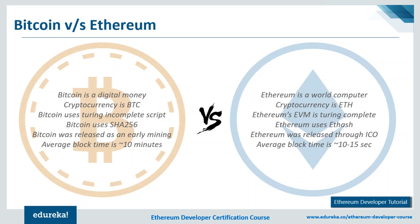The primary difference between the two coins lies in their purpose. Bitcoin was designed as an alternative to fiat currencies with a vision to decentralize the payment system, while Ethereum's developer had a motive to provide a platform for developing decentralized applications. Bitcoin script is Turing incomplete while Ethereum is Turing complete, meaning complex programming and application development can be done on Ethereum.